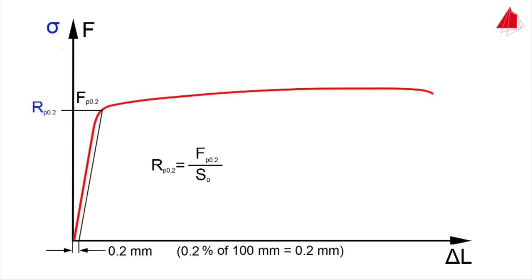Tensile strength, percentage elongation after fracture, and percentage reduction of area are calculated in the same way as in the first test.